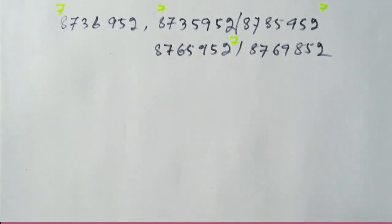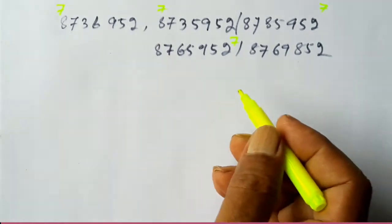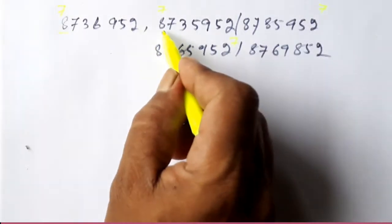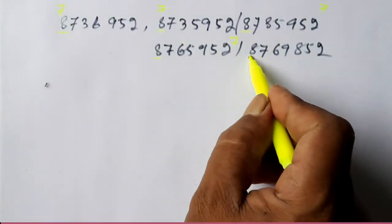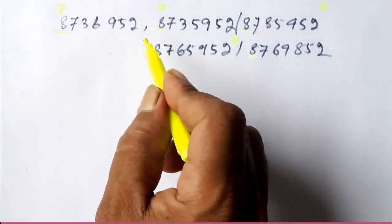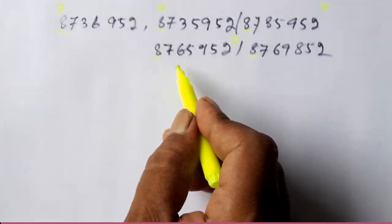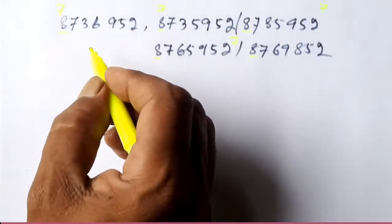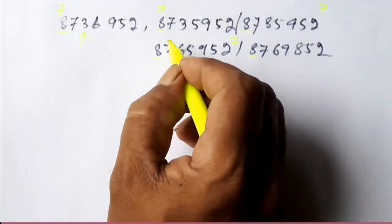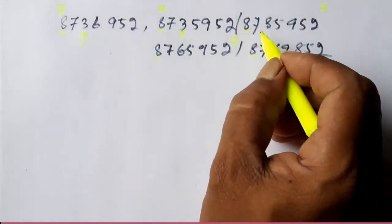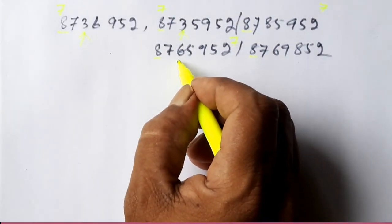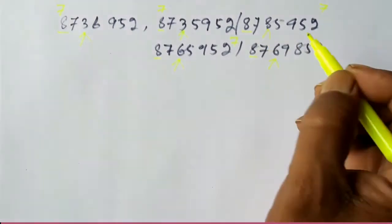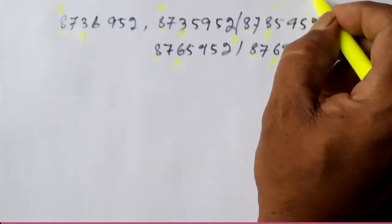We have to write the smallest number first. Comparing the first digits: all are 8. The second digits are also the same in all 5 numbers. Comparing the third digits: here is 3, here also 3, but among the others we have 6, 6, and 8. So the number with 8 in the third place is the largest number.